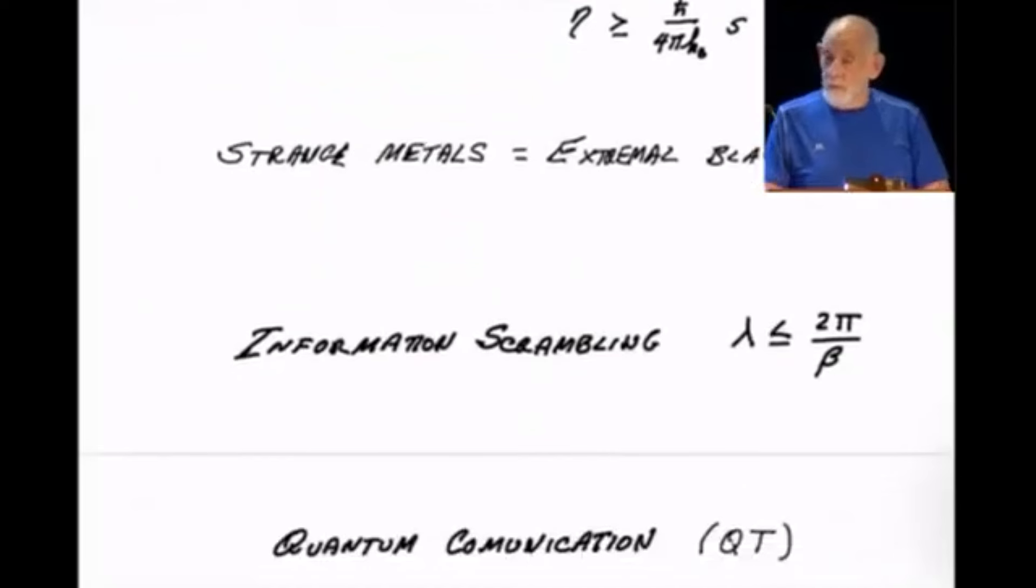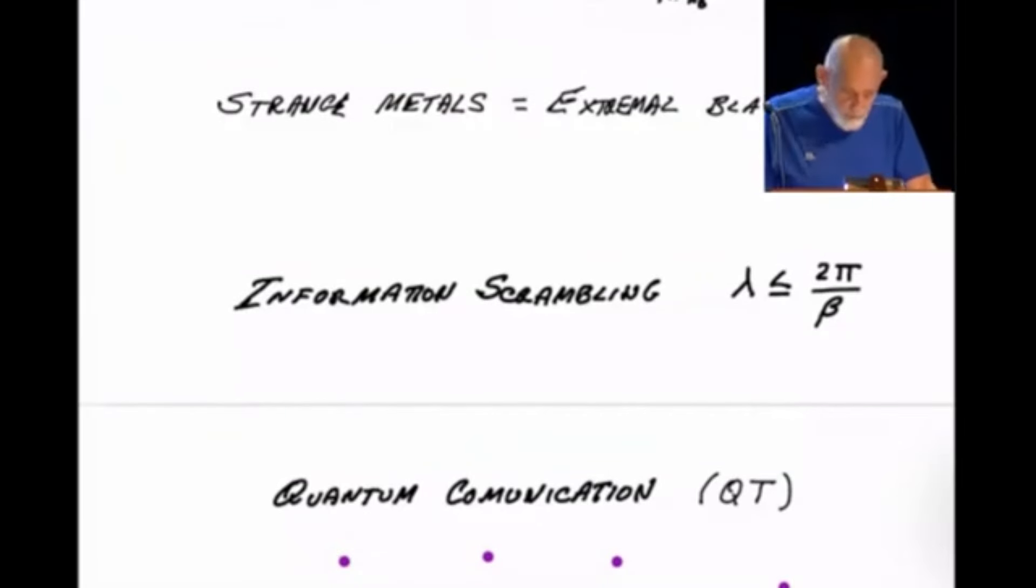There are things called strange metals. Strange metals are a form of matter that was discovered by condensed matter physicists. Are they important in technology? I don't really know, but they were discovered about 30 years ago, and they were metallic systems which behaved just differently than ordinary metals. It's turning out that those strange metals are mathematically identical to certain special kinds of black holes, black holes called extremal black holes or near extremal black holes. Both sides are quantum mechanical. One side is also gravitational, extremal black holes. The other side is the pure quantum mechanics of certain materials.